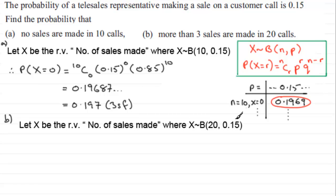And we want more than three sales, so we're looking for the probability that X is greater than three. And to work something out like this, I certainly don't want to do 4, 5, 6 all the way up to 20 and calculate them using this formula here.